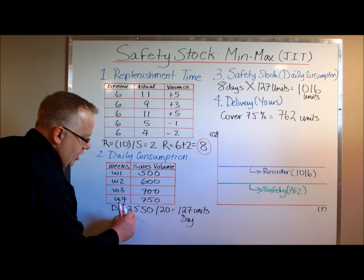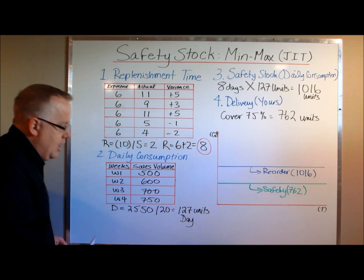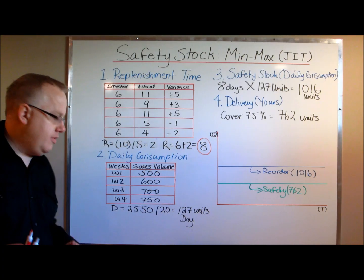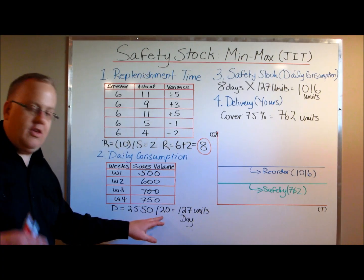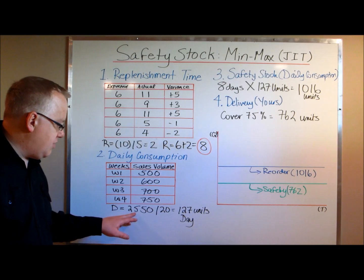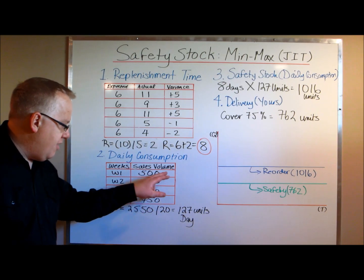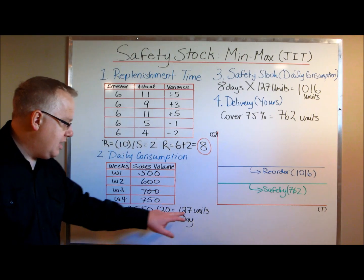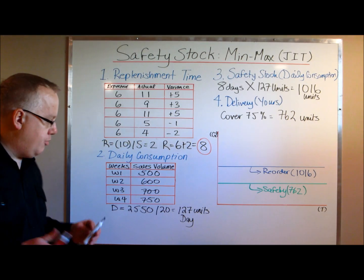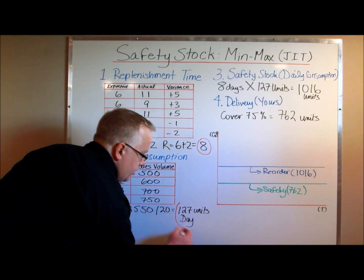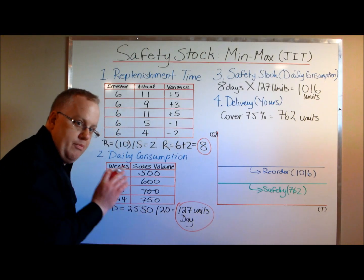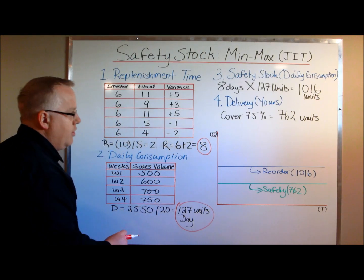For the month, we've got 2,550 units total. We don't divide by 30 days — we divide by the number of buying days. In this case, we assume five buying days a week, Monday to Friday, so 20 buying days. 2,550 divided by 20 gives us 127 units per day as an average sales volume. Make sure you account for buying days, not days in the month, or it will skew your number.